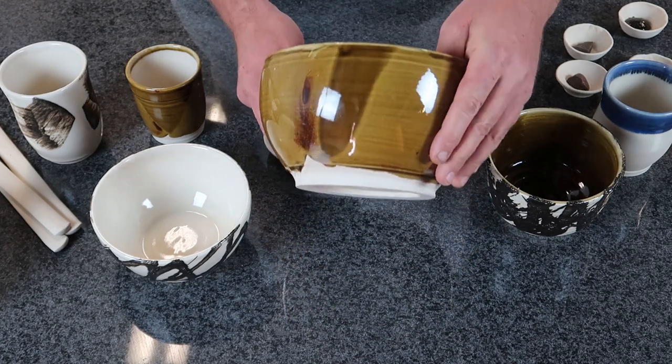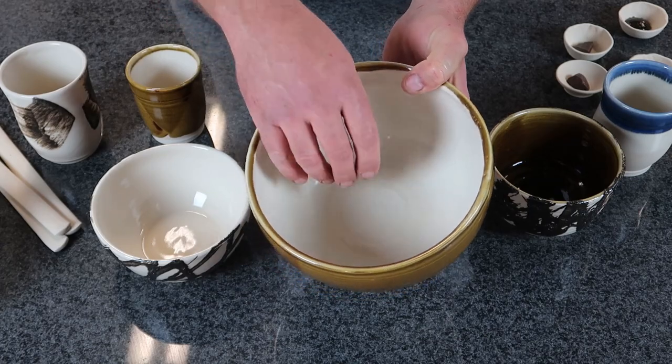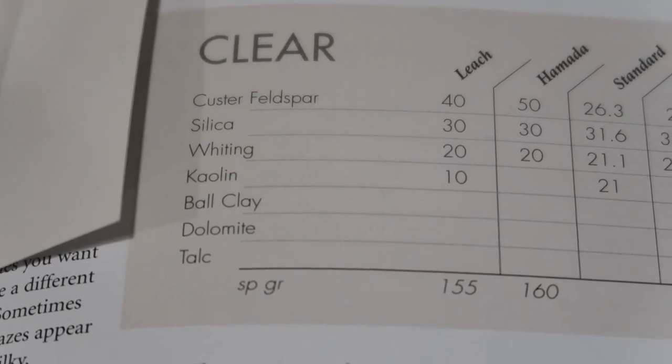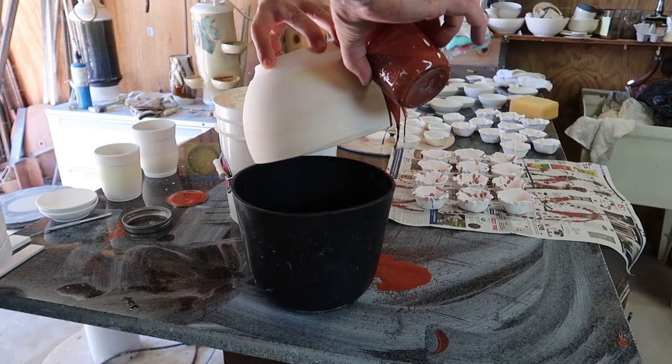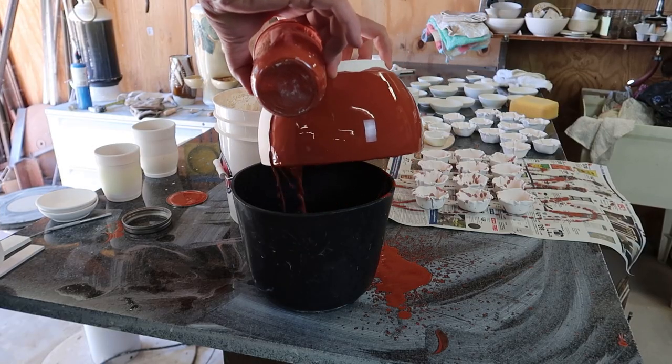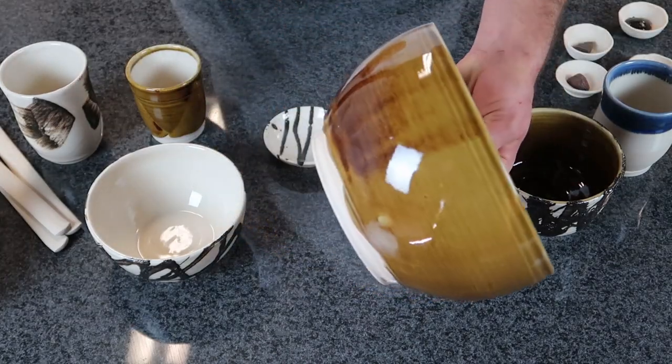One of the things I had to do was make some new glazes. I got out John Britt's book and I looked up a Leach recipe for a clear and a Leach recipe for a Tenmoku. As far as those glazes go, they worked out really nice, really glossy. So I consider those a win.